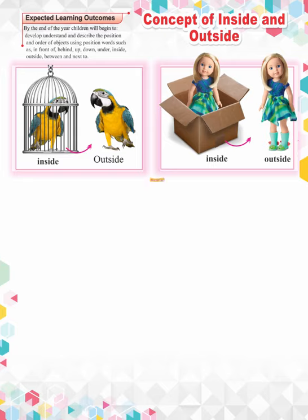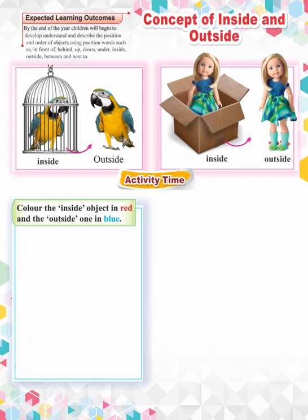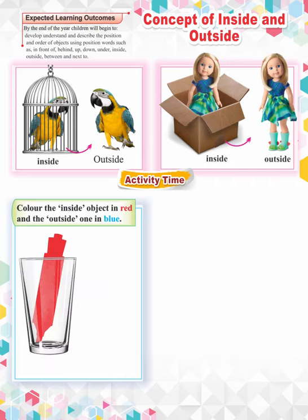Let's enjoy activity time. Color the inside object in red and the outside one in blue. The marker in the glass shows that it is inside, so color the marker in red. If the marker is not in the glass, it shows that it is outside, so color the marker in blue.